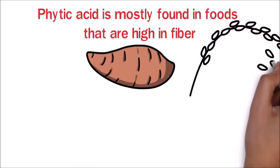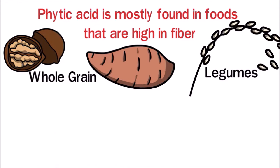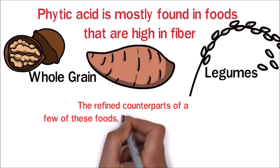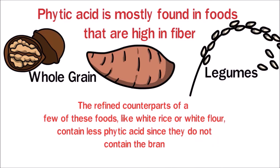Phytic acid is mostly found in foods that are high in fiber, such as yams, brown rice, nuts, legumes, and whole grains. The refined counterparts of a few of these foods like white rice or white flour contain less phytic acid since they do not contain the bran.